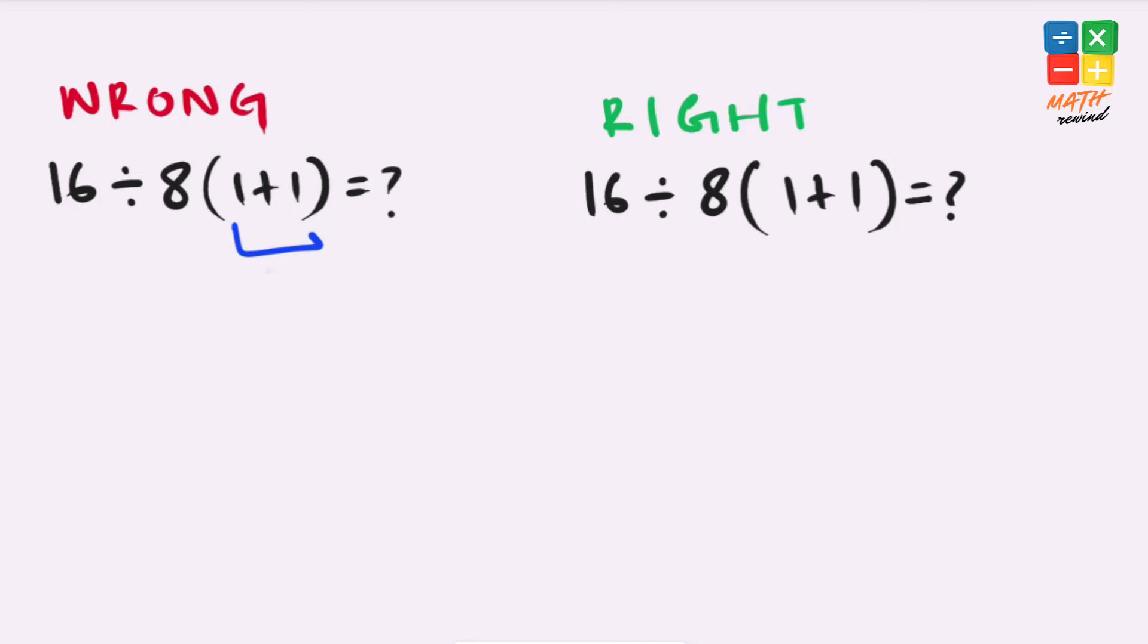Here we have 1 plus 1 which equals 2. Our equation simplifies to 16 divided by 8 times 2. 8 times 2 is 16, and 16 divided by 16 equals 1.